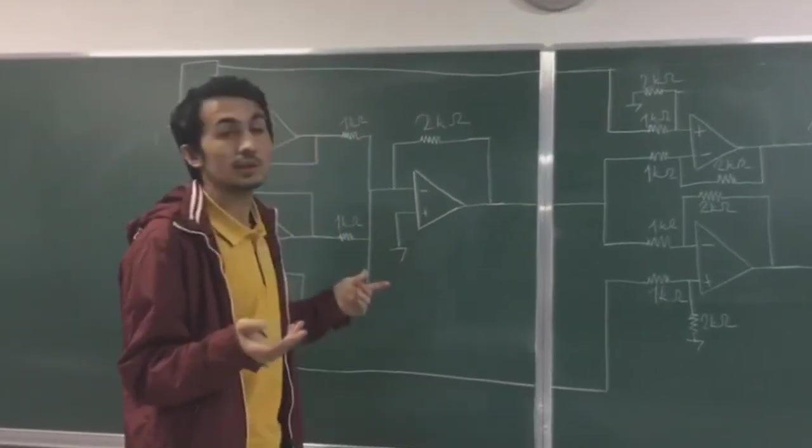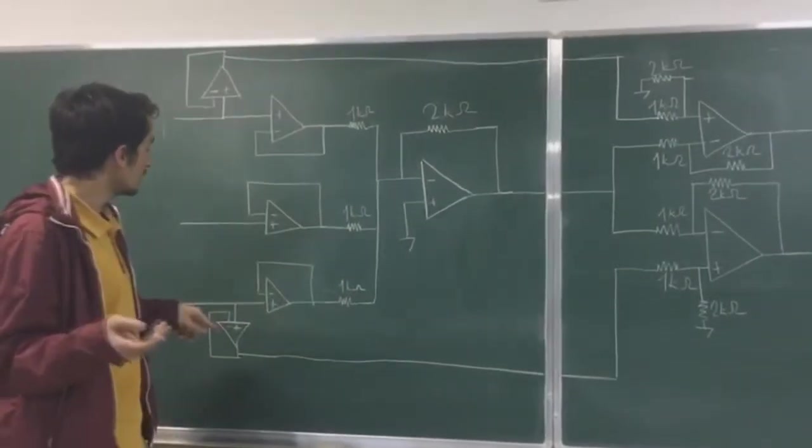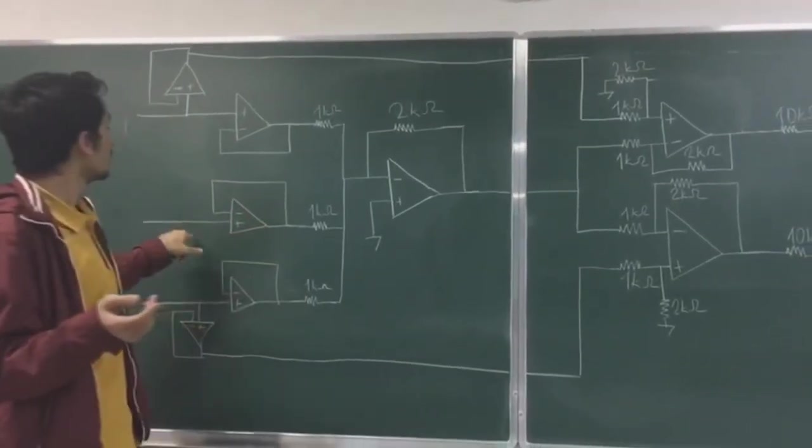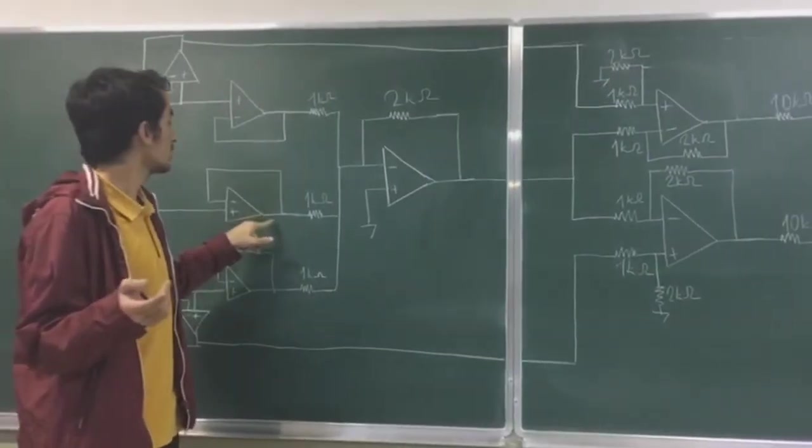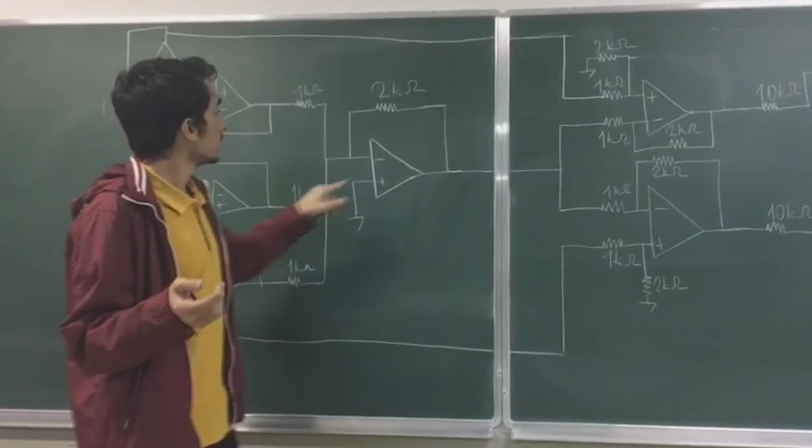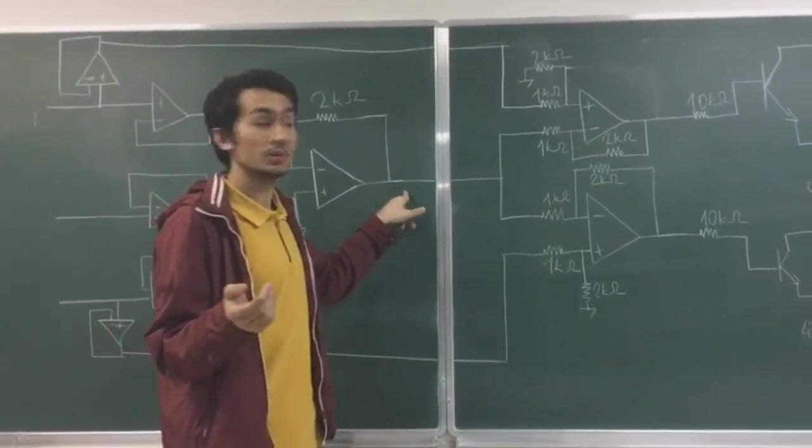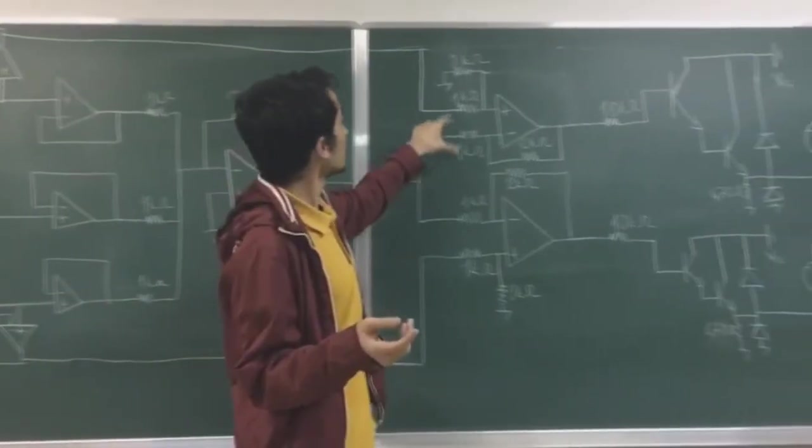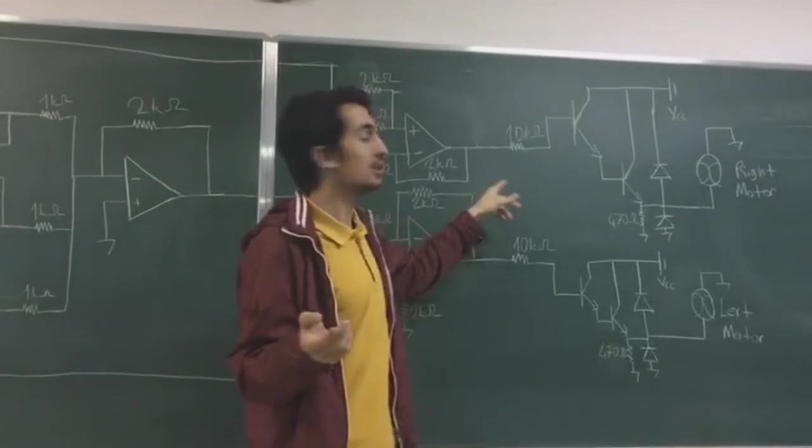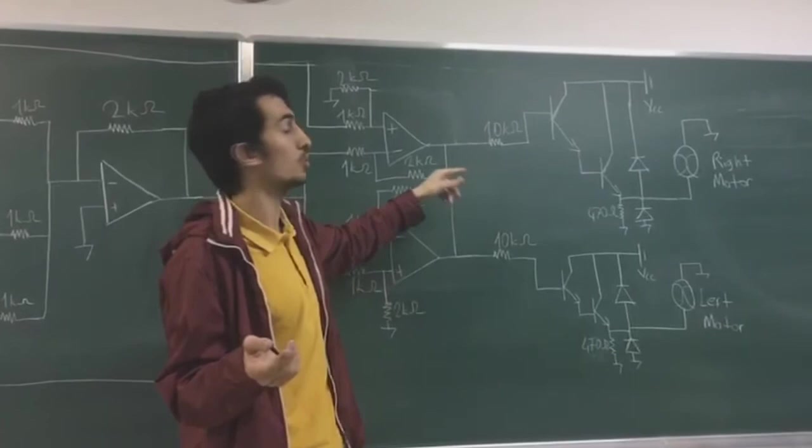Let's assume that go straight command is given. If go straight command is given, the output of left and right filters will be 0. Therefore only there will be a voltage at this straight filter. There will be only voltage on summing amplifier output, so the difference amplifiers will give the same output. There will be the same voltages at the 2 bases of the motor driving circuit, so the car will move straight.